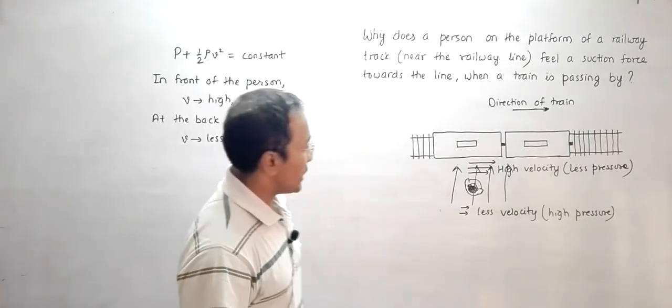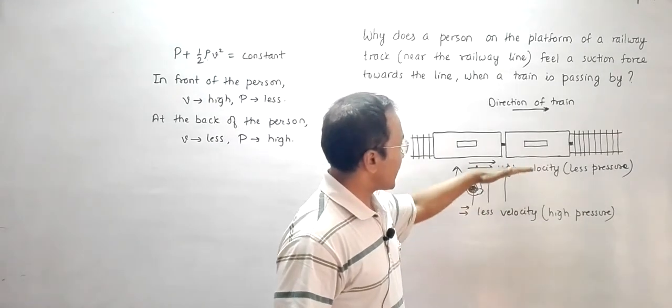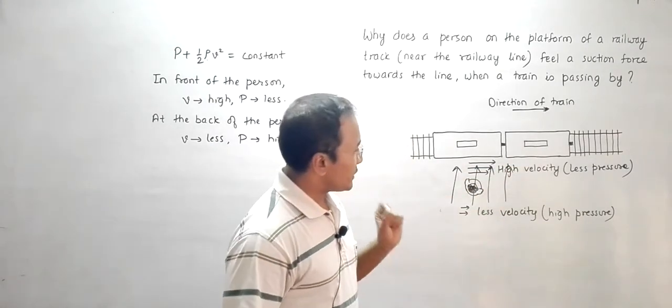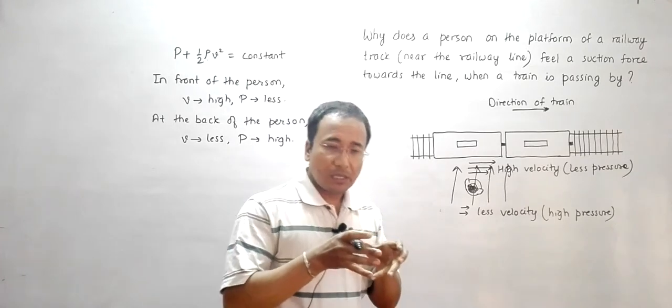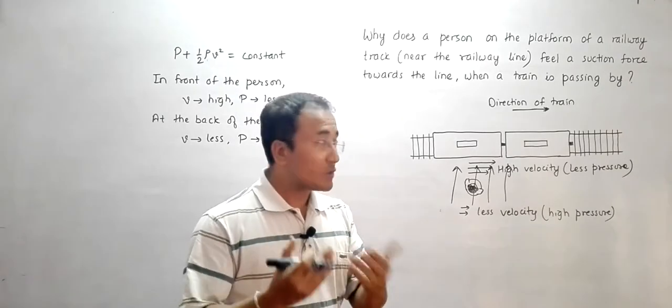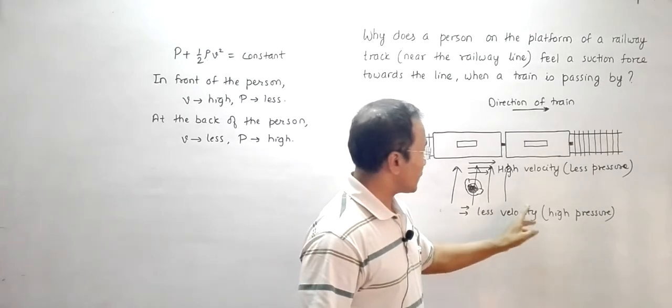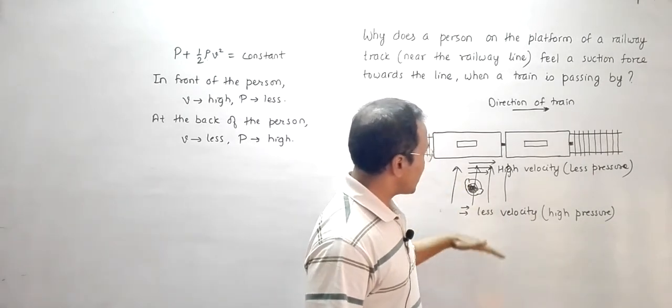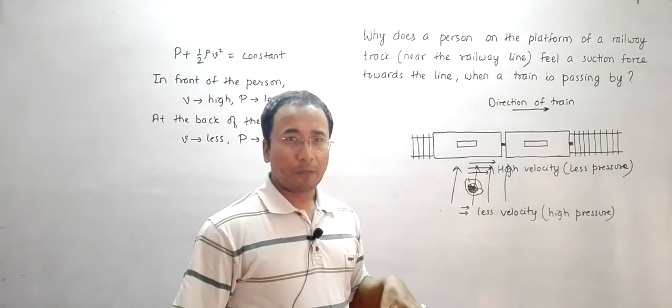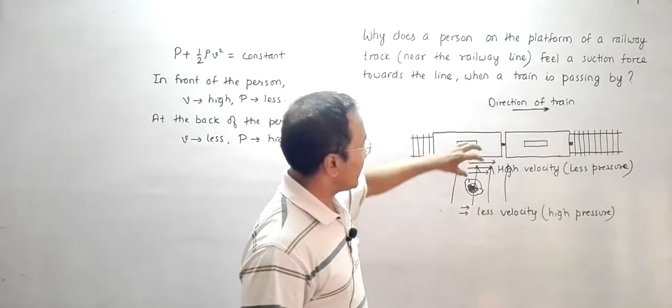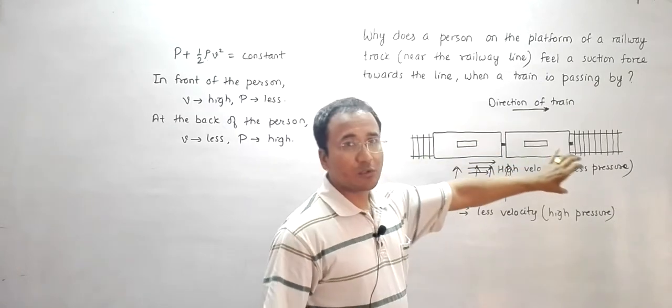So there seems to be a pressure difference in front and at the back of the person. That means there will be a force. Force always appears from a region of higher pressure to low pressure. So there will be a force on this person from this region to that region. That is why he will be pushed towards the speeding train, and that is how he feels that there is a suction force in this region.